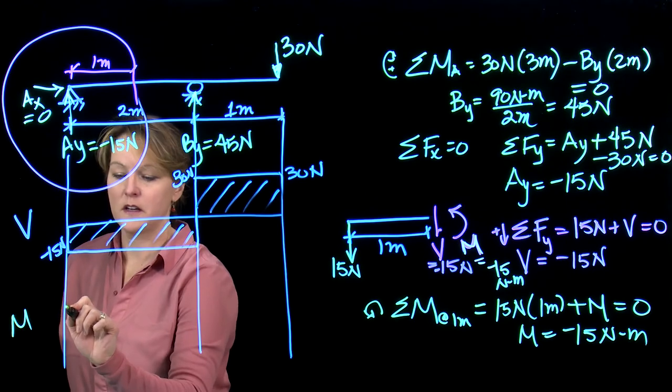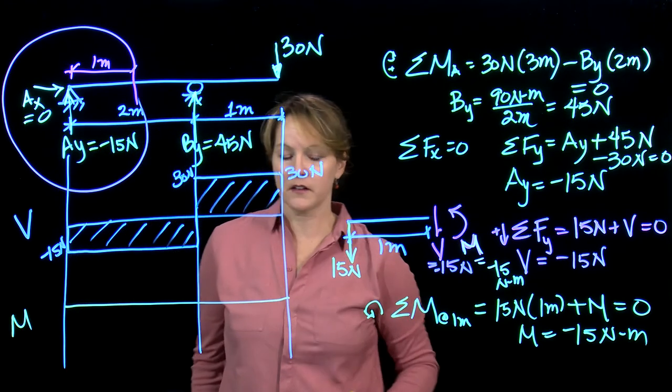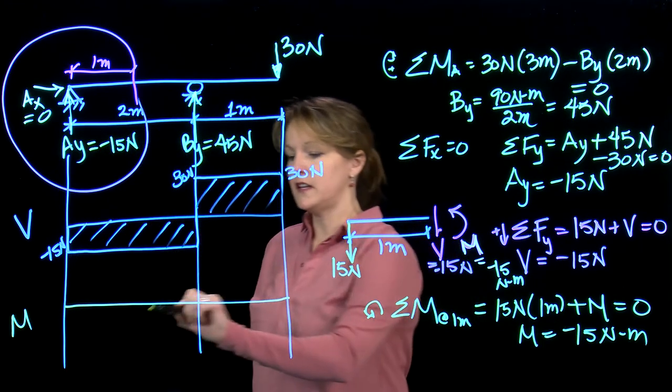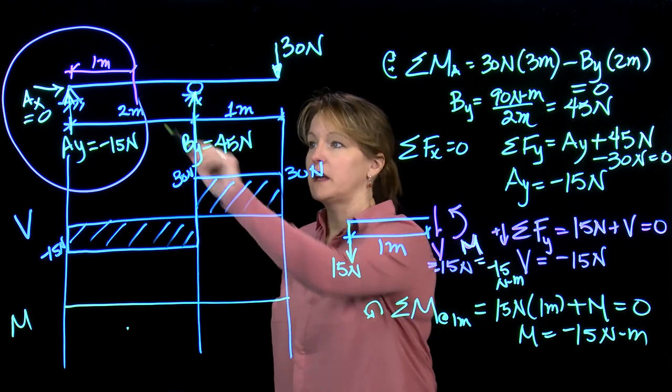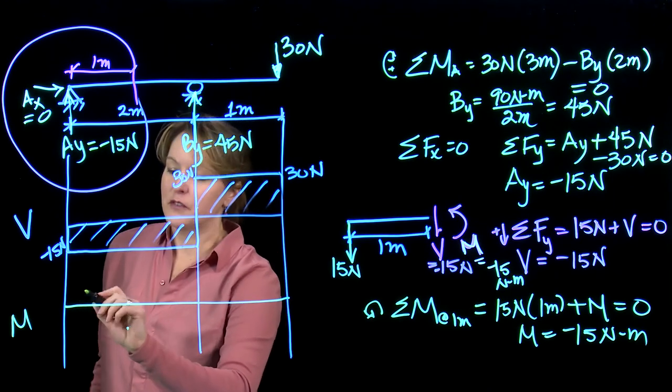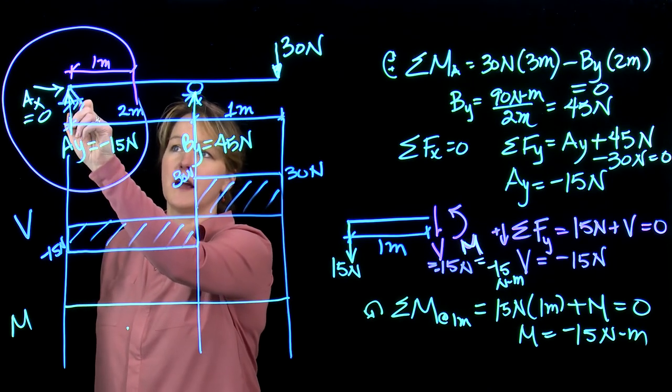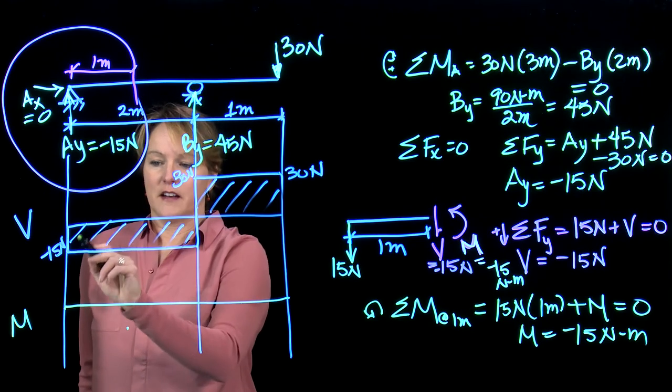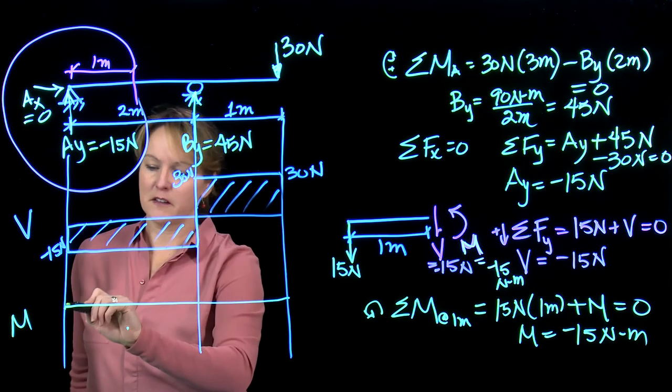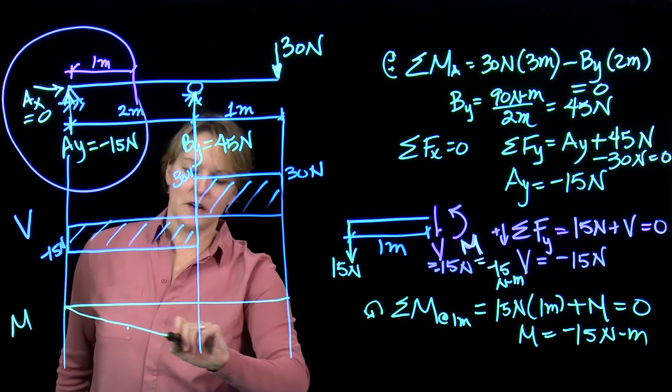Let's look at moment as well. I can draw a diagram that represents the moment along the length. We know it's minus 15 at 1 meter. At the moment a pin is 0, so it's going to start at 0. It turns out that the shear diagram tells me the slope of the diagram. I know I have to go through 15.